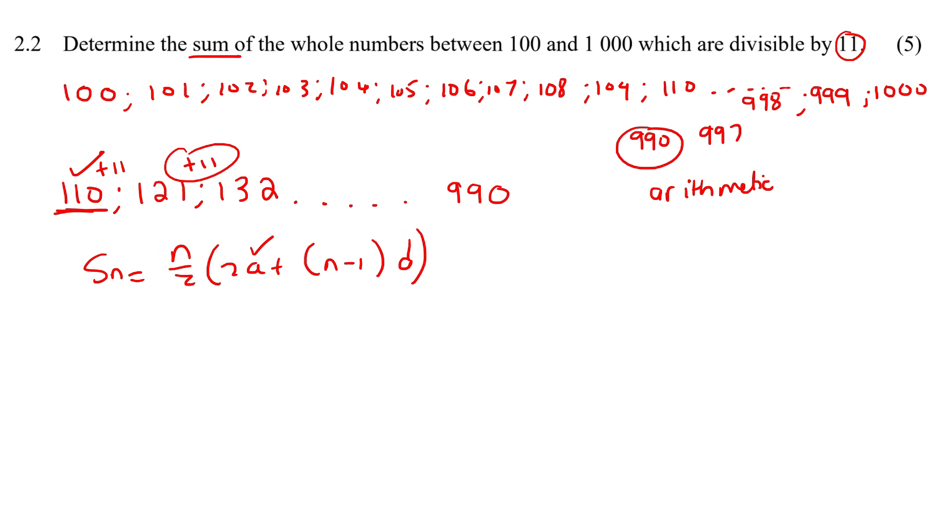We don't know the number of terms, so what we do is we use this formula now for an arithmetic sequence and we look and see how many terms there are. So if we know that this is the last term, we can put 990. Then a is 110, and then the difference is 11.